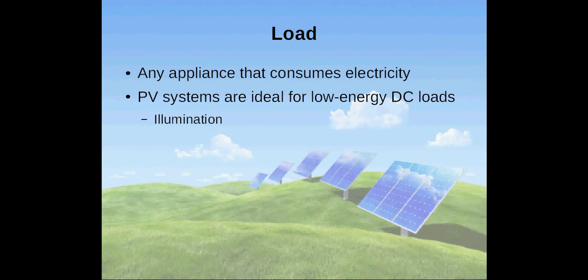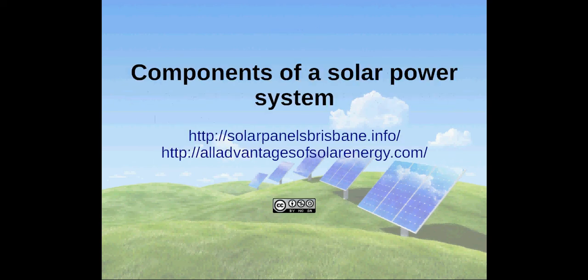Solar panels, battery, regulator, converter and load make up the solar panel system. When all of these components are installed properly, a solar power system can sustain itself for use. Thank you for watching this presentation. You can find more information on solar energy on solarpanelsbrispen.info.